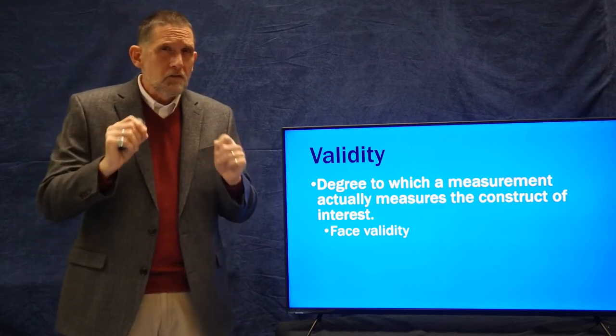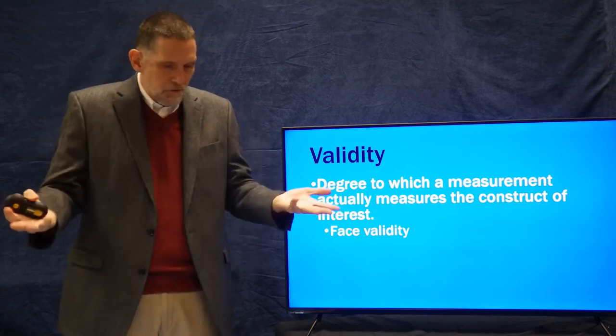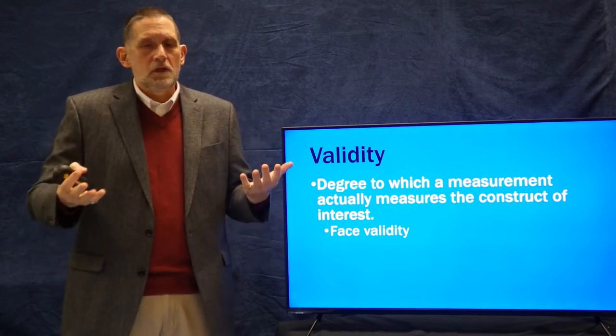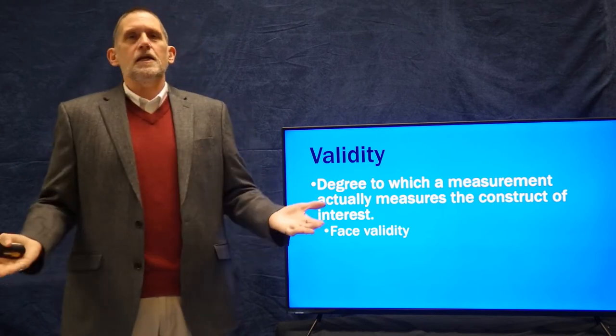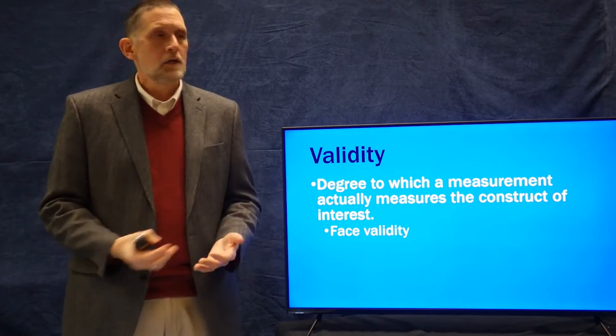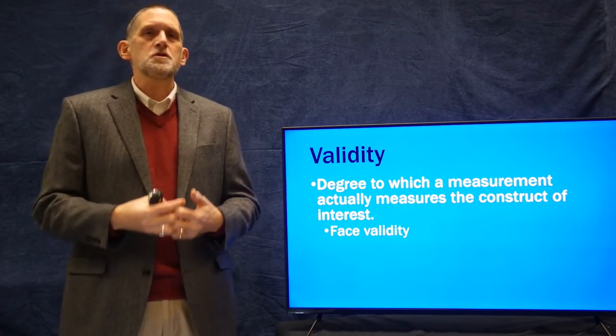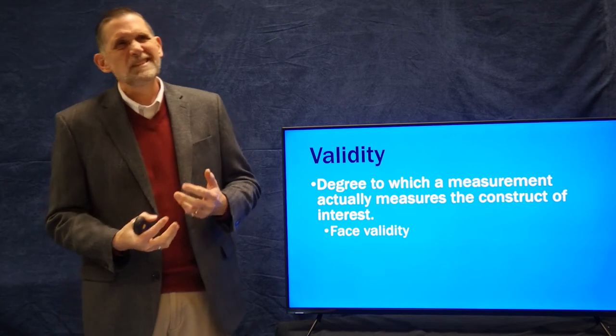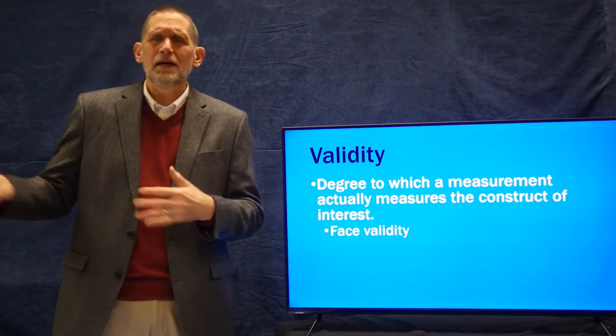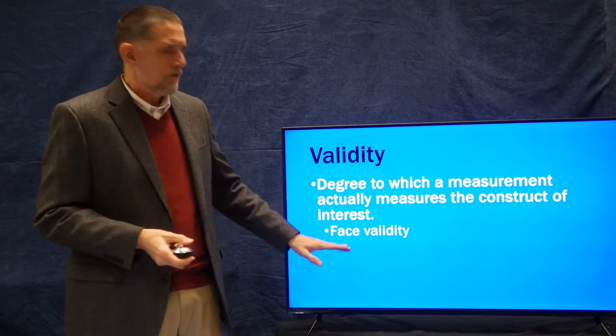A couple of different forms of validity or ways that we can examine validity. One of them is just face validity. It's just on the face of it, does this make sense? So, height. I want to measure it in centimeters when a person is standing upright. Does that make sense to call that height? Well yeah, that has face validity. If I'm looking at happiness or sadness, and I say, my measure is how many times a person smiles in an hour. Is that really happiness or sadness, or is it contextual depending on if they're at a comedy show or at home eating dinner or something? That's face validity.